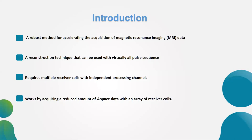Barrel imaging is a reconstruction technique that can be used with all pulse sequences. It is not a pulse sequence technique itself — it is a reconstruction technique. It is usually applied with pulse sequences such as spin echo, fast spin echo, or gradient echo. We use this reconstruction technique to accelerate the acquisition time. Basically, it requires multiple receiver coils with independent processing channels, and it works by acquiring a reduced amount of K-space data with an array of receiver coils.